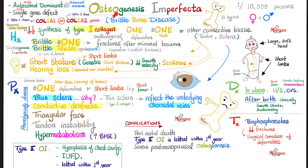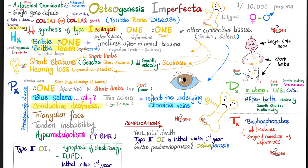Osteogenesis imperfecta has many subtypes. The most common subtype is autosomal dominant, but it can also be autosomal recessive. It affects about 1 in 10,000 to 20,000 persons. The problem in collagen type 1 involves two genes: COL1A1, for the alpha-1 chain of collagen, and COL1A2, for the alpha-2 chain of collagen.